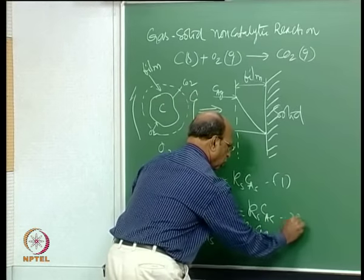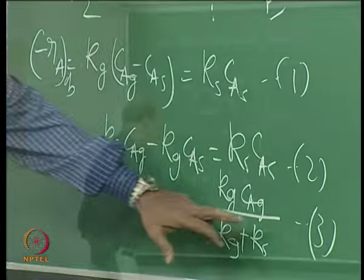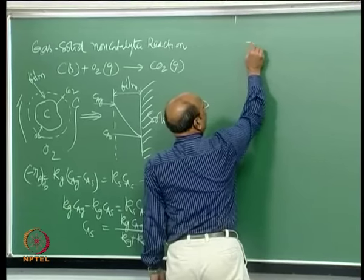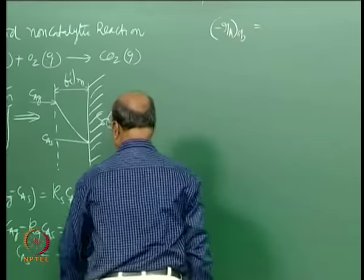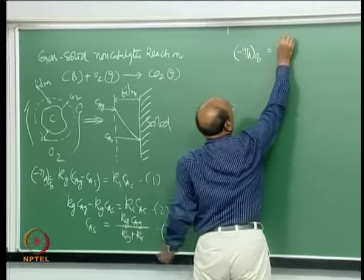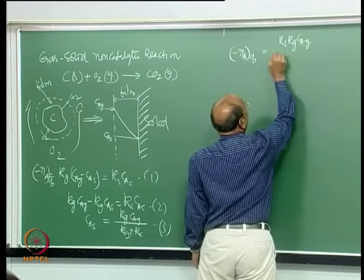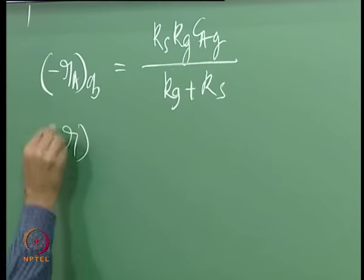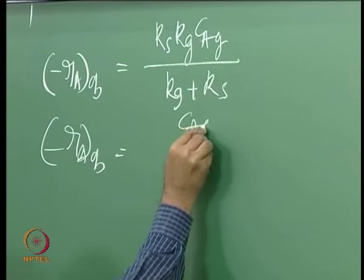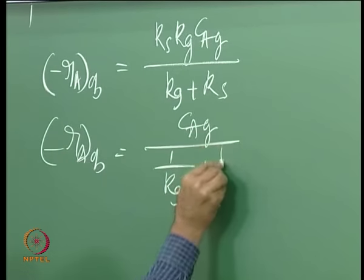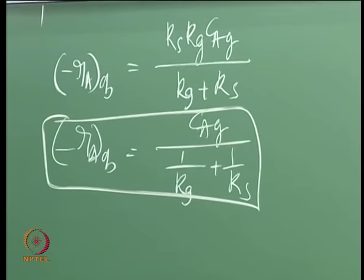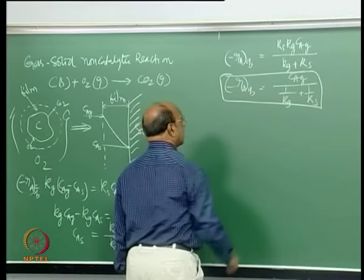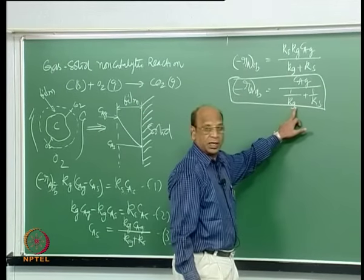Calling the equations 1, 2, and 3, equation 3 is substituted into equation 1. The observed rate becomes: minus Ra,observed equals KS times KG times CAG divided by (KG plus KS), which can also be written as CAG divided by (1/KG plus 1/KS). This is the rate expression for coal combustion. It is peculiar because it contains both a mass transfer coefficient KG and a reaction rate constant KS.